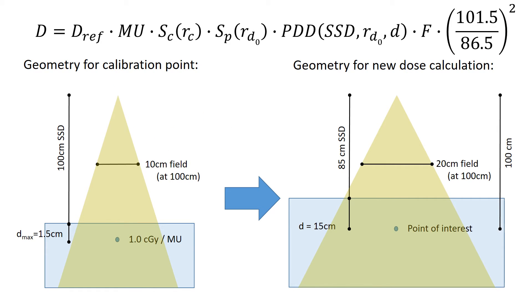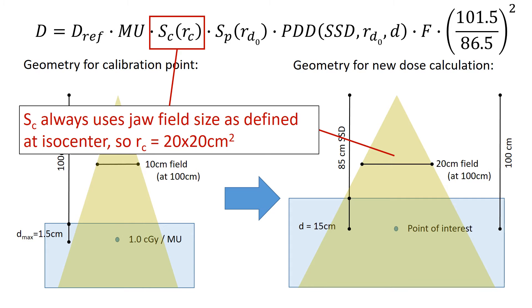Next, we're going to look at our scatter factors. And first, we'll look at collimator scatter factor. Collimator scatter factor always uses the jaw's field size as defined at the isocenter. So it's going to be equal to 20 by 20 cm, since that's the new field size.